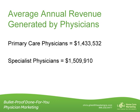Looking at data from a national physician search and consulting firm: the average annual revenue generated by primary care physicians — defined as family practitioners, general internists, and pediatricians — was just over $1.4 million. The average for specialist physicians was just over $1.5 million. Both sectors are down slightly, with physicians having to see more and more patients each year to arrive at that same annual revenue. Physicians are only allowed to bill for their own services.